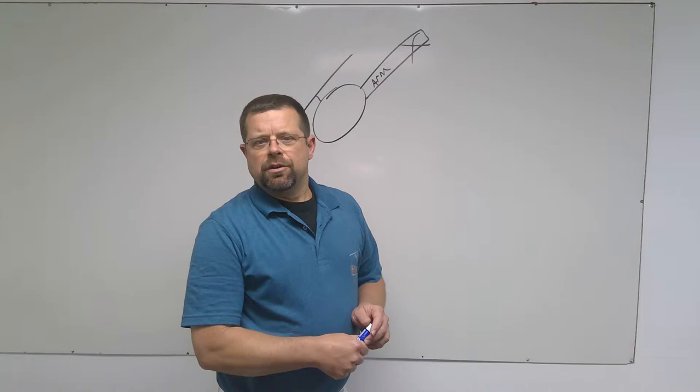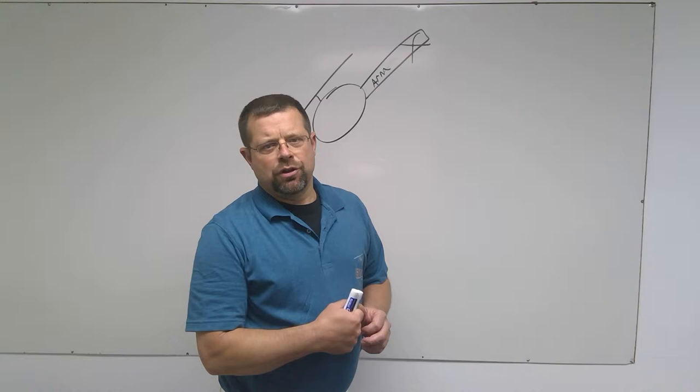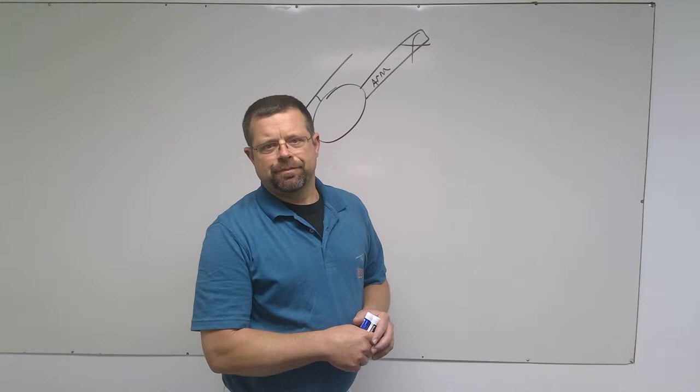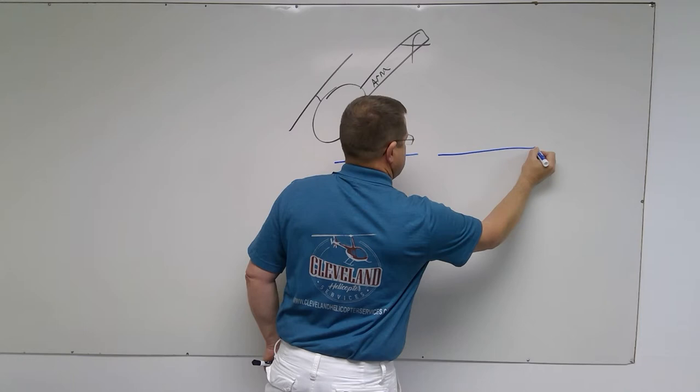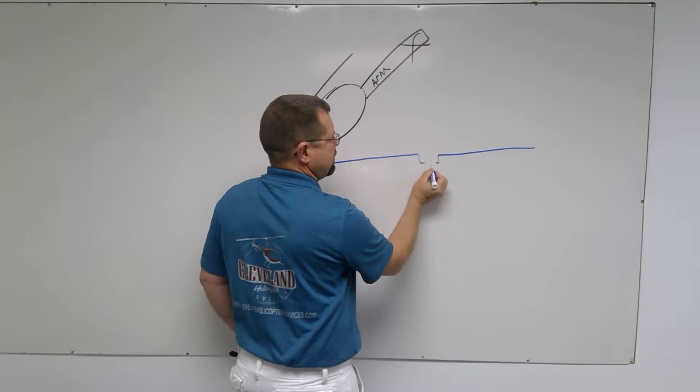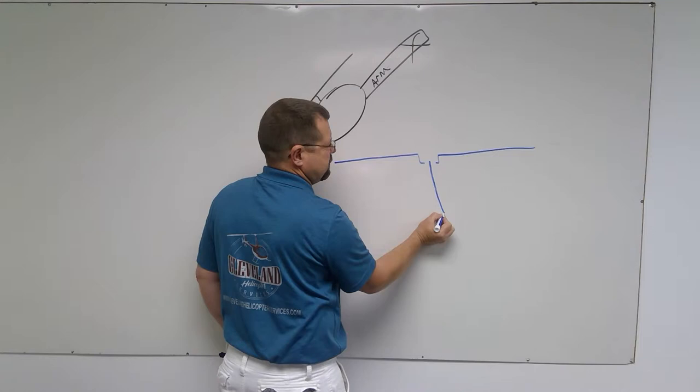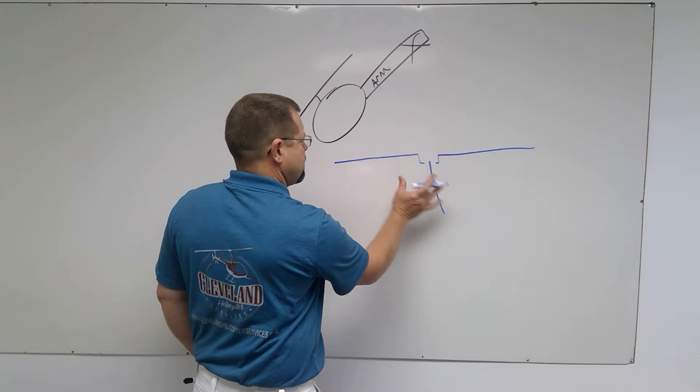Also, you could cause inputs to the rotor system that could cause a tail strike from the main rotor striking the tail. A semi-rigid system that's underslung will look something like this. Now if this is not loaded...